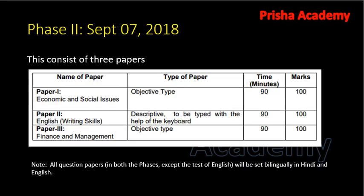Now let's talk about Phase 2. Phase 2 is the main exam — marks obtained here will be considered for the merit list. Phase 2 consists of three papers: Paper 1, Economic and Social Issues; Paper 2, English Writing Skills; and Paper 3, Finance and Management. Papers 1 and 3 are objective type and available in both Hindi and English, while Paper 2 is in English only. The entire examination is computer-based — you will type answers using a keyboard and will not be given paper or pen.